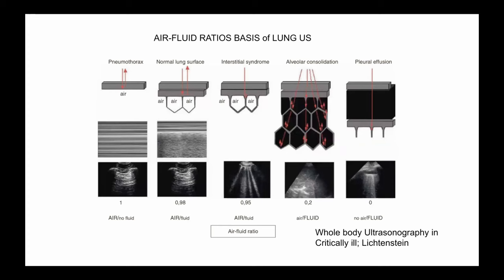All the images we get on lung ultrasound are based on the ratio of air and fluid. For example, if you have a pneumothorax, the air between the visceral and parietal pleura offers high acoustic impedance to ultrasound waves, so they don't transmit through it. Ultrasound waves bounce back and forth generating A lines, placed at greater depths on the screen as more time elapses. Because the visceral and parietal pleura are not touching, there is no lung sliding. With normal lung surface the same thing happens, but you get lung sliding and the shimmering artifact.